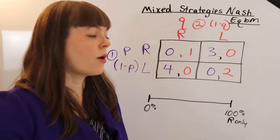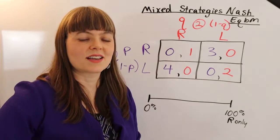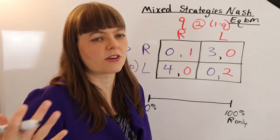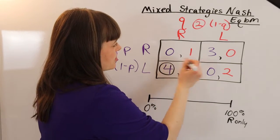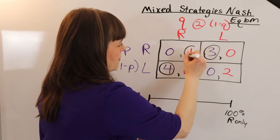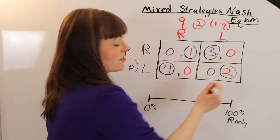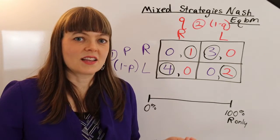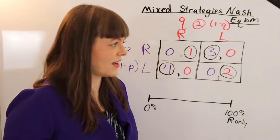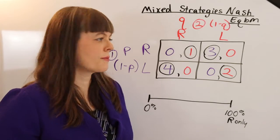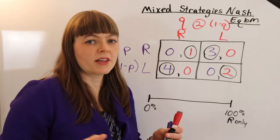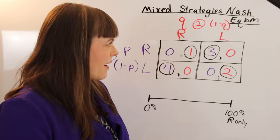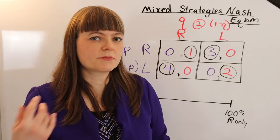If we solve this using the classic way of solving Nash equilibrium — I'll post a link below if you don't know how to do that — what you're going to find is that there's no pure strategies Nash equilibrium. But is there still a Nash equilibrium? The answer is yes, but it's going to be a case where the players mix between two strategies.